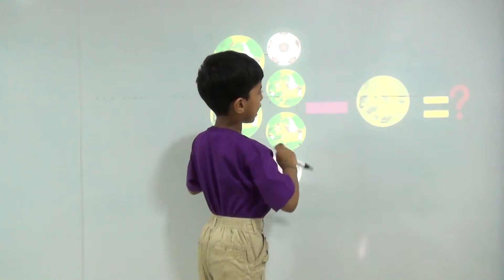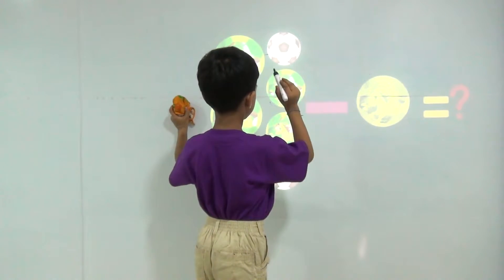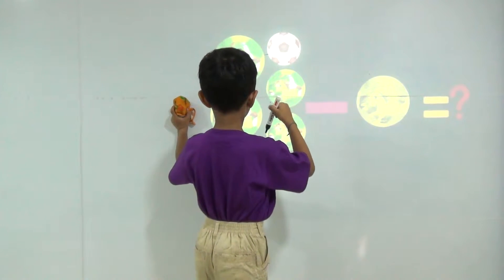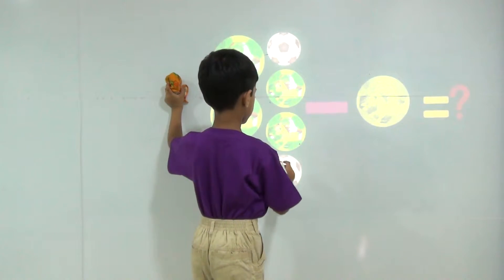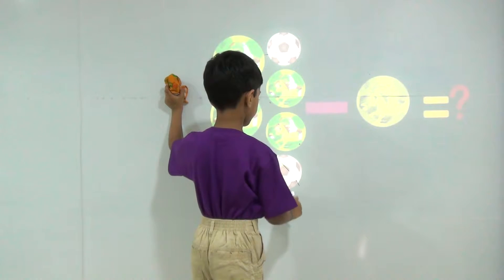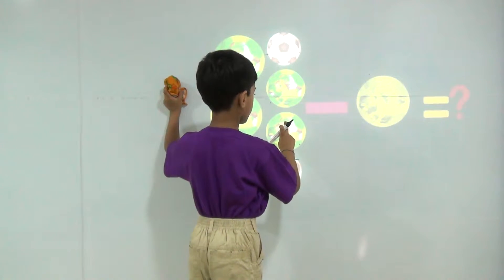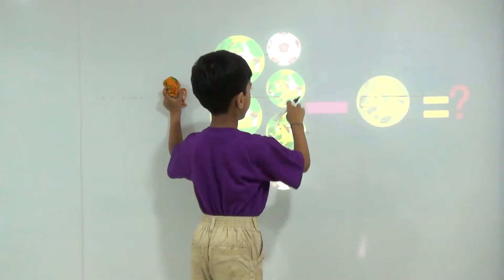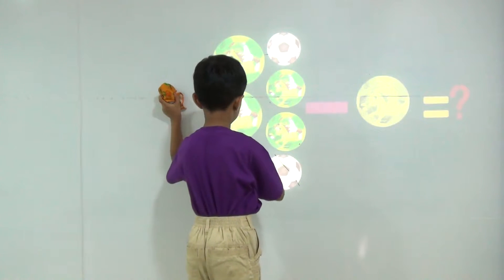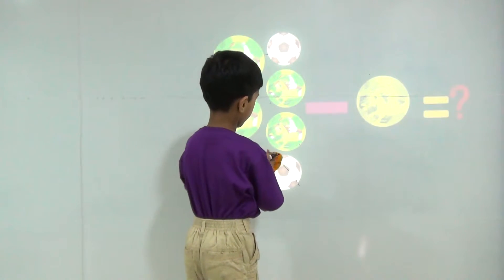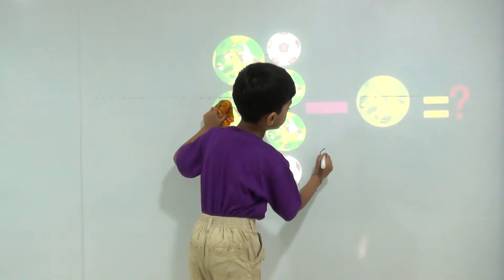I have 7 balls. My bhaiya takes 1 ball. So how many balls do I have? 1, 2, 3, 4, 5, 6. So the answer will be 6.